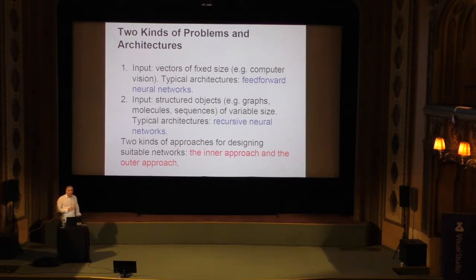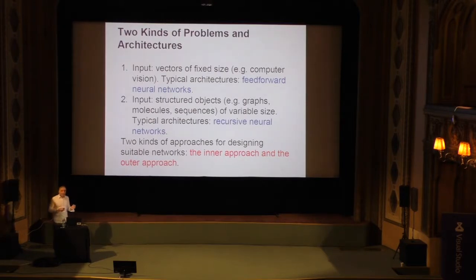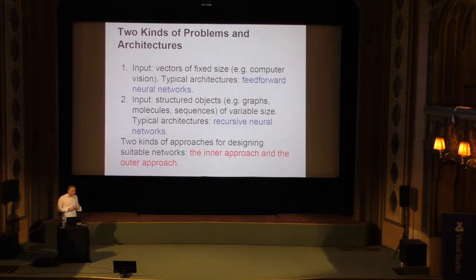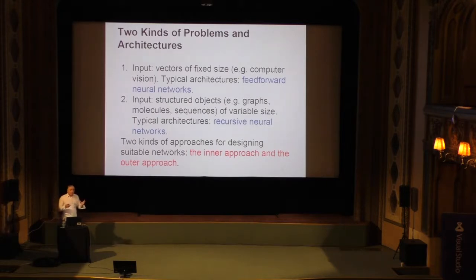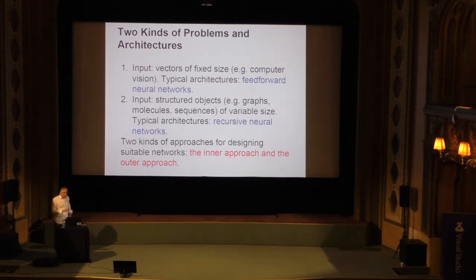Before I do that, a little piece of theory. When you're dealing with images or vectors of fixed size, you can use feed-forward neural networks. But in biology and other sciences, we very often have data that is variable in size — for instance, DNA sequences, protein sequences, small molecules, chemical molecules. They come to you with a graphical structure — a graph, a sequence, etc. So if you want to deal with these kinds of objects, you have to use recurrent or recursive neural networks.